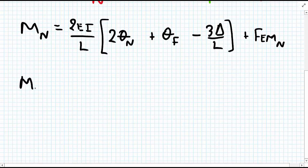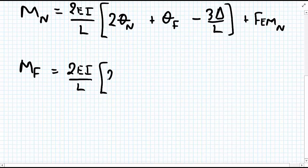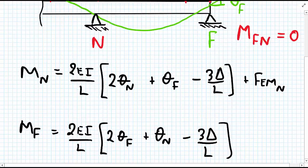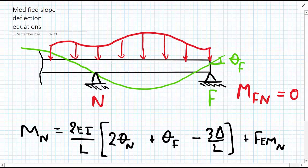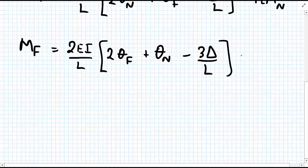We'll do the same for the far end now. We have the moment at the far end equal to 2EI divided by L in the brackets of [2θ_F + θ_N - 3Δ/L], and because we don't have a fixed end, we have plus no fixed end moment.